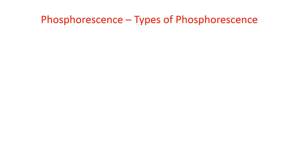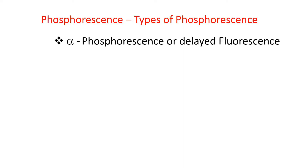Phosphorescence is of two types. Number 1: alpha phosphorescence, or delayed fluorescence. Number 2: beta phosphorescence.